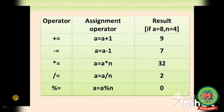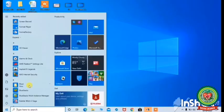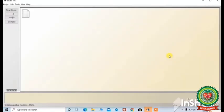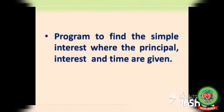To recap, we have done arithmetic operators, relational operators, logical operators, unary operators, and assignment operators. Now let's look at example number three on page number 66 practically. I'm going to open BlueJ. Click on the Start button, click on BlueJ, then click on the BlueJ option. The BlueJ window will appear. The program we are going to do is to find the simple interest where the principal, interest rate, and time are given.